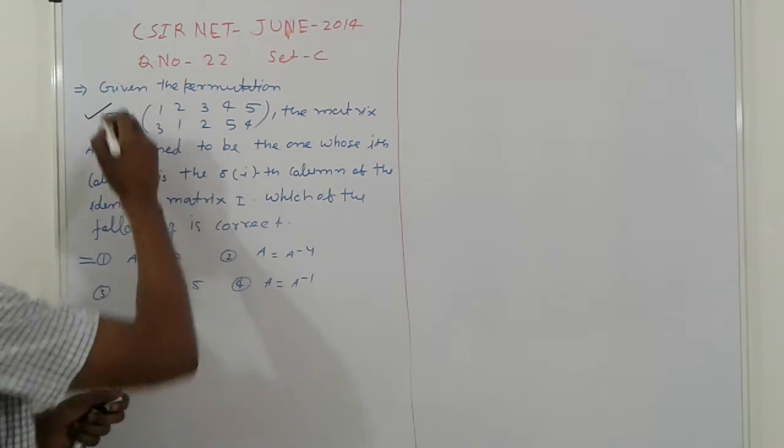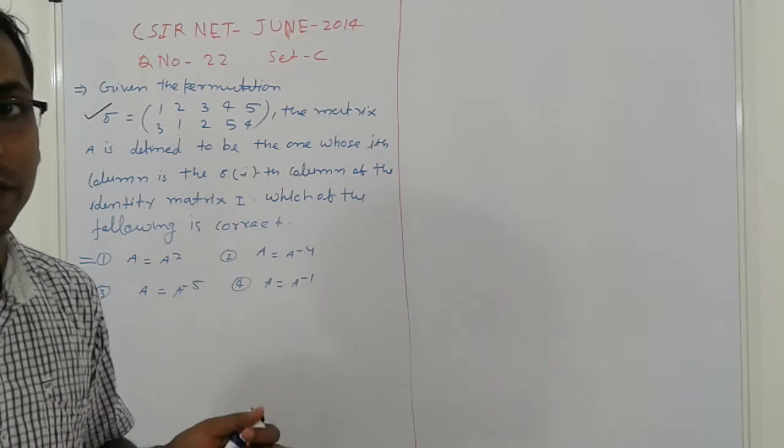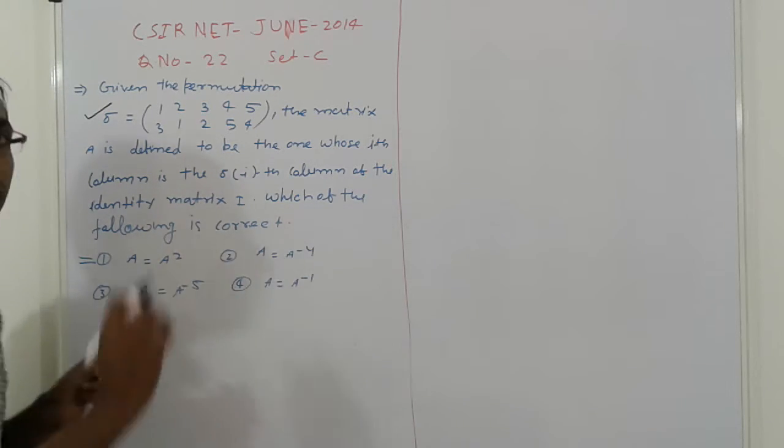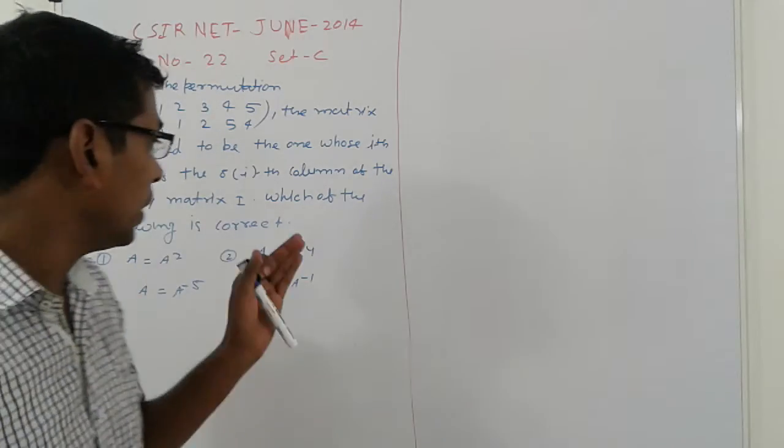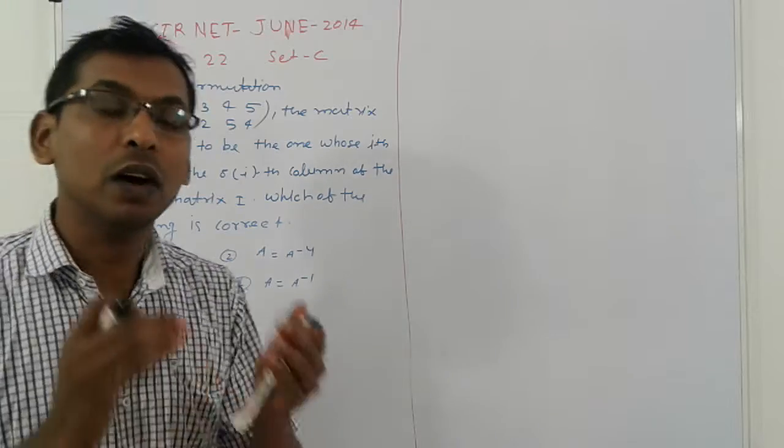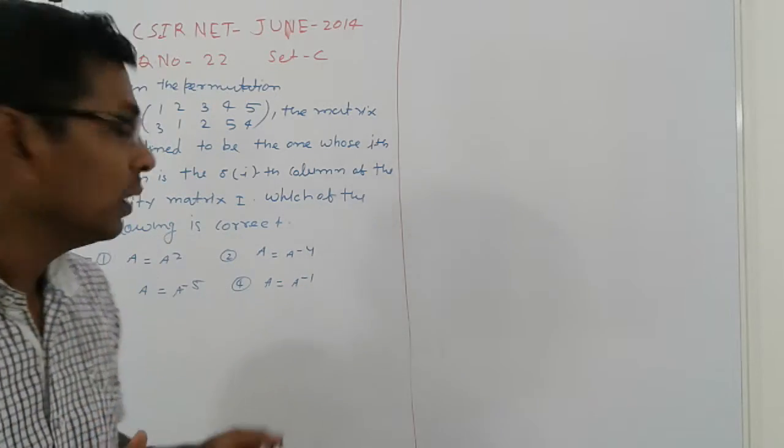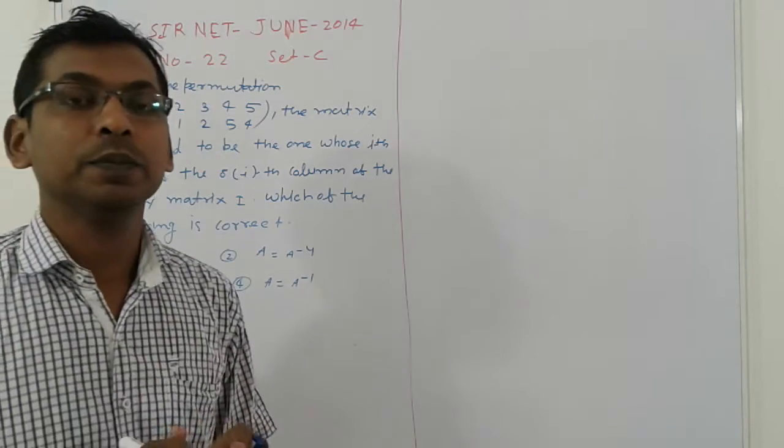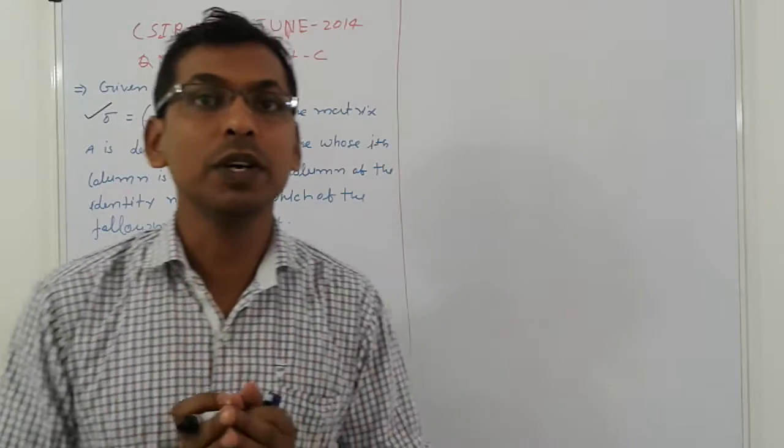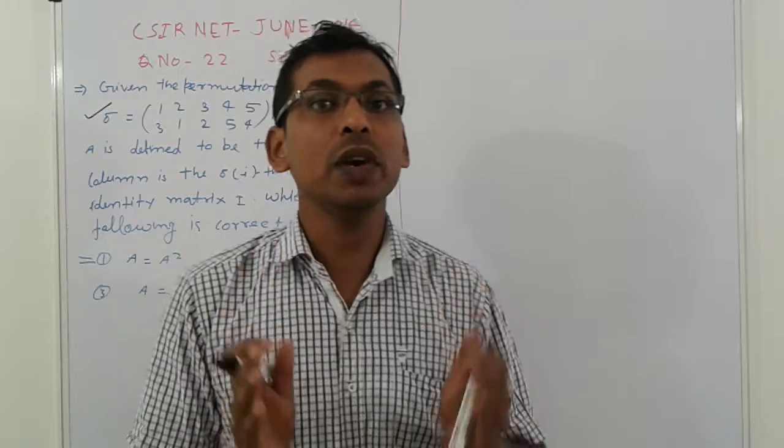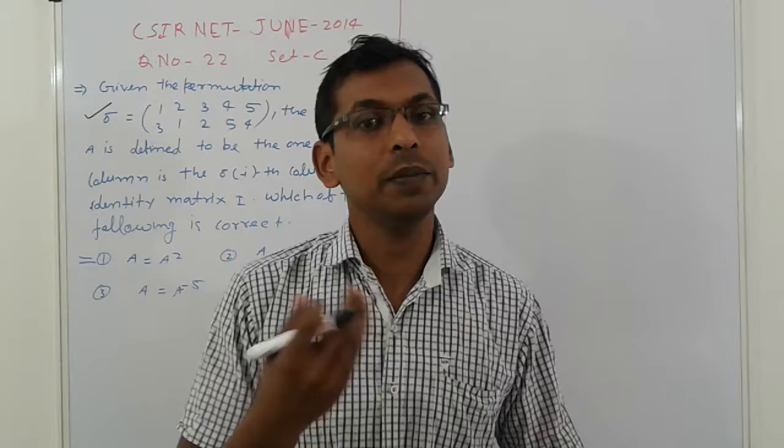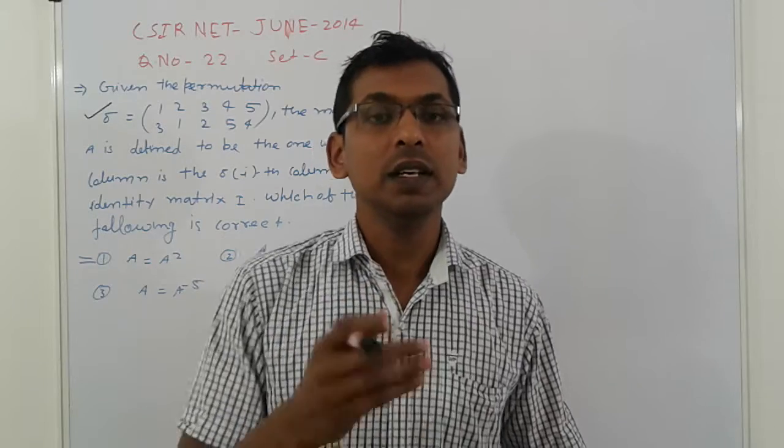Whatever permutation is given, what is the order? If we can find out the order, then we will get the answer. This is very important. How can we find out the order? This is the importance. The first work is: given permutations, we will convert into disjoint cycles. And then we will find the order.